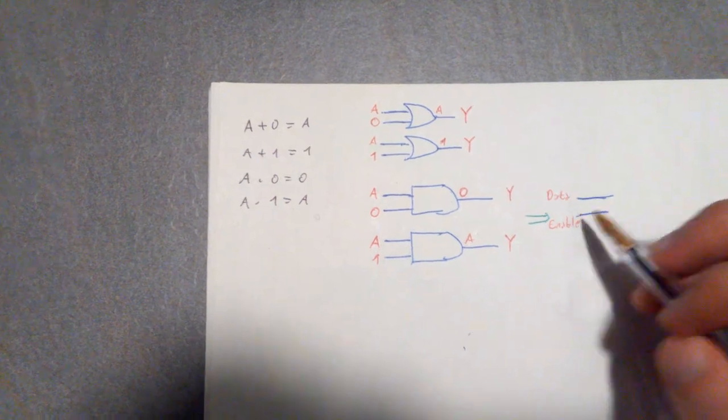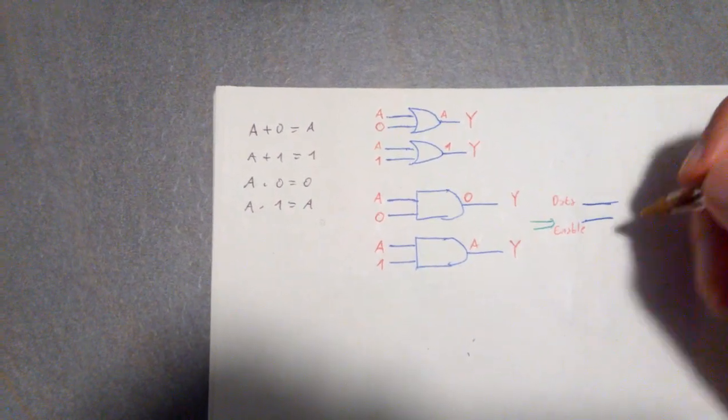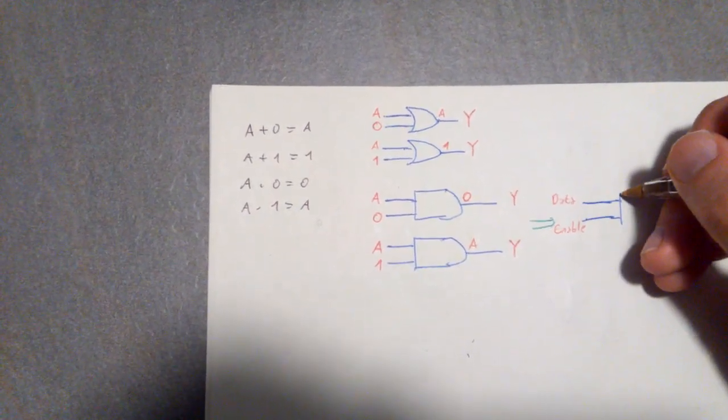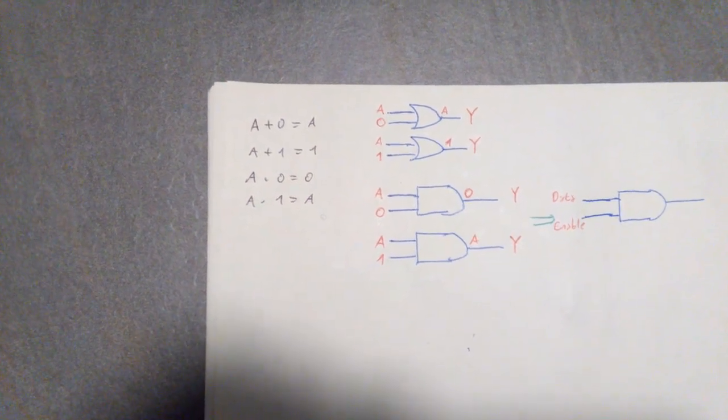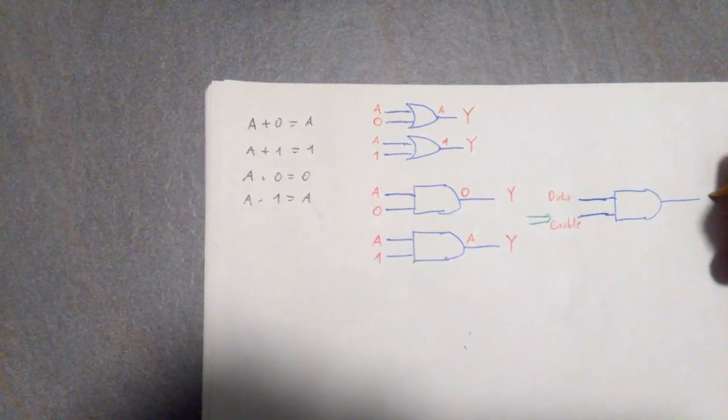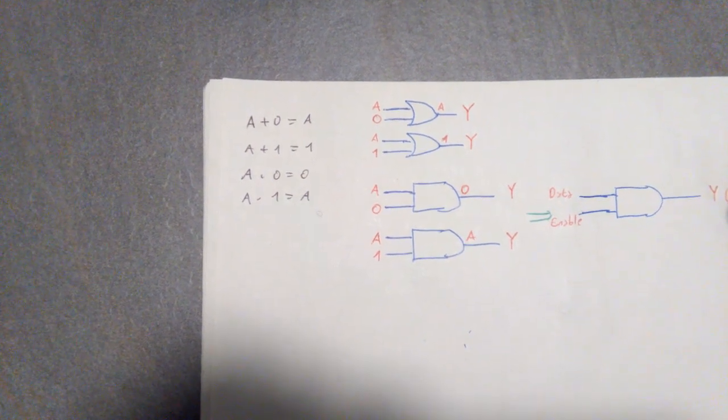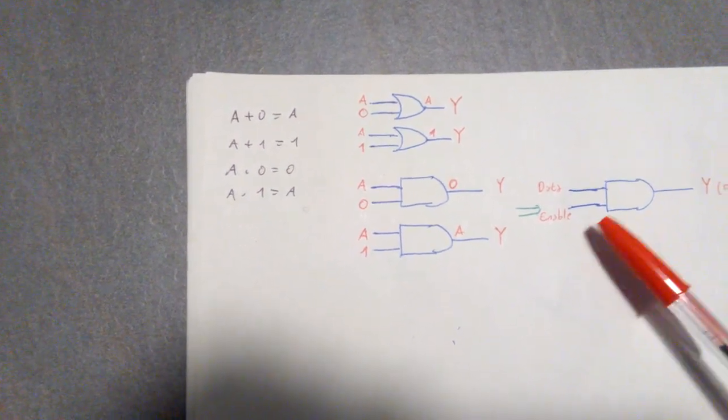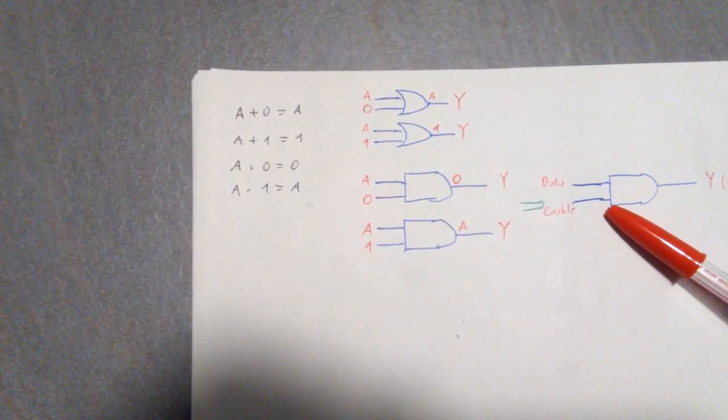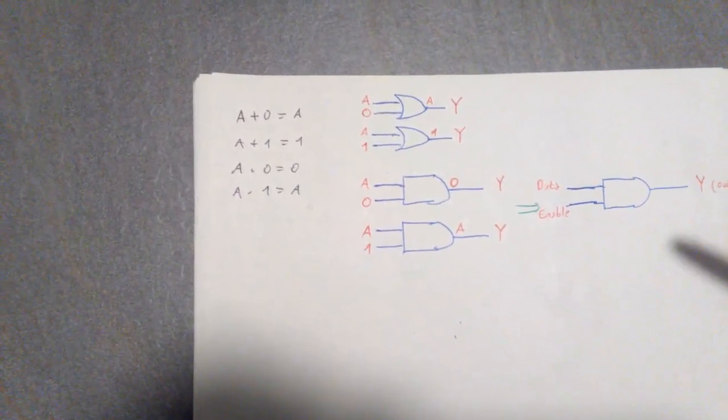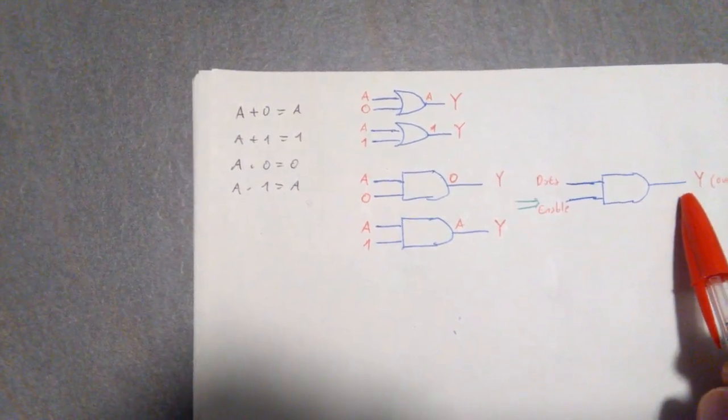So we have two inputs, one is data, the other is enable. So two lines go to an AND gate, which here has the Y, which is the output. Now, if the enable line is actually 0, then the output is going to be 0.